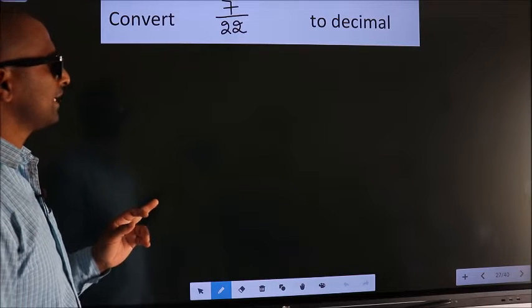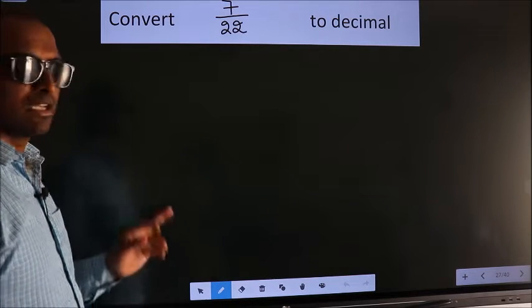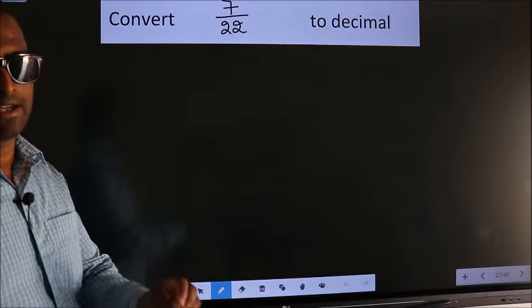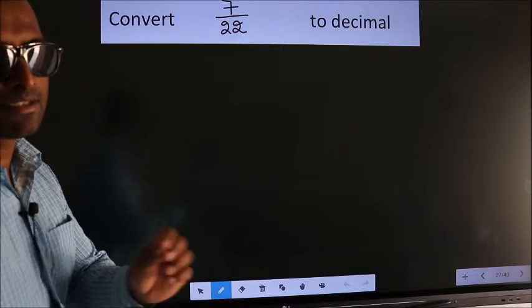Convert 7 by 22 to decimal. To convert this to decimal, we have to divide. And to divide, we should frame it in this way.